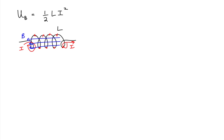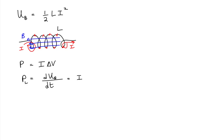To show this expression for potential energy, let's start off with an expression we're already familiar with: power. Power is given as the product of the current of a circuit component and the potential difference of that circuit component. Remember, we can express power as the time rate of change of energy — specifically, the time rate of change of the potential energy of the inductor, which is energy stored in the magnetic field. This equals the product of the current through the inductor and the potential difference of the inductor.